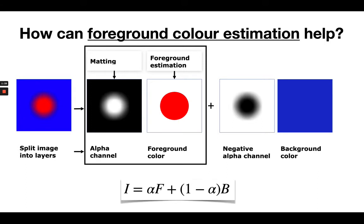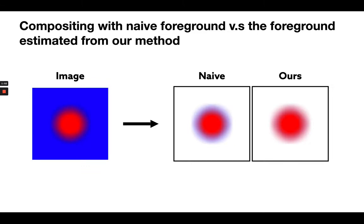And the foreground estimation is a companion to alpha matte, where we estimate the foreground color. We need to extract and combine these layers to get a good quality composite. We can see that when we combine the layers with our method, we achieve a much better composite without the blue seeping through.